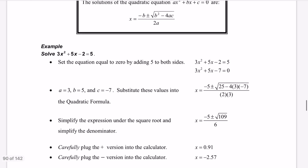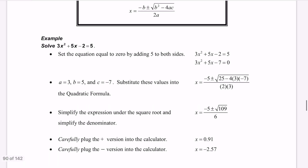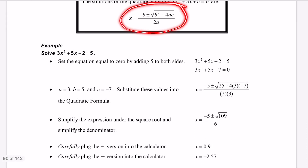Looking at this first example, we want to set this equal to 0. Right now it's set equal to 5, so we're going to subtract 5 from both sides of the equal sign. The 5's cancel to give us 0, and negative 2 minus 5 gives us negative 7. Then we write down our a value, our b value, and our c value. No matter what order they're in, the a value is whatever number is in front of the x squared.